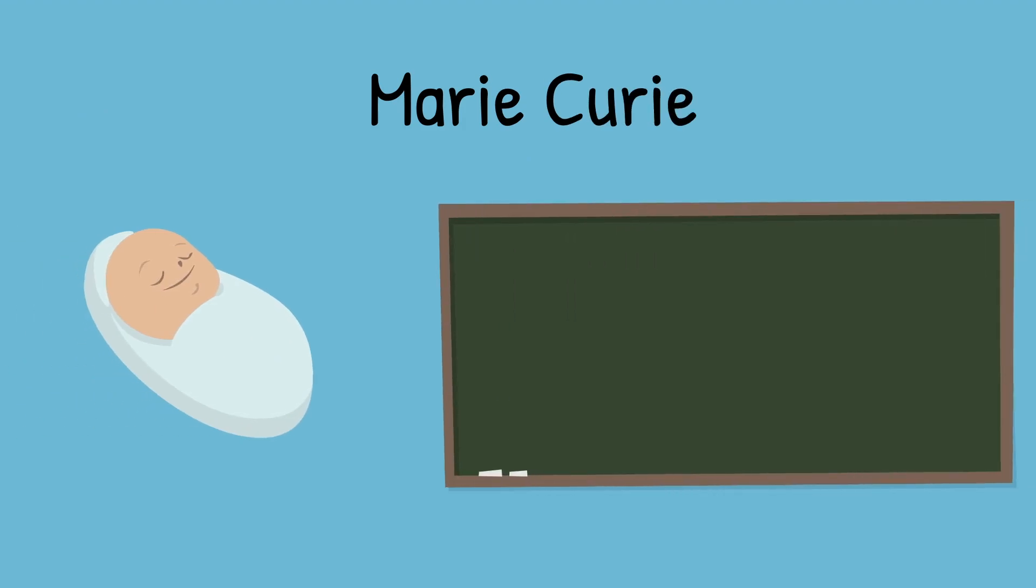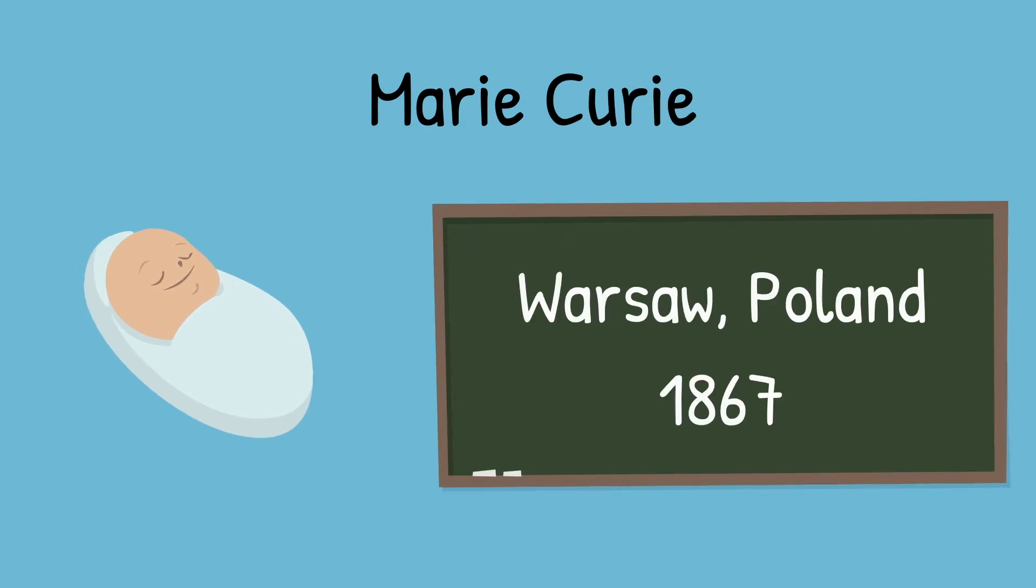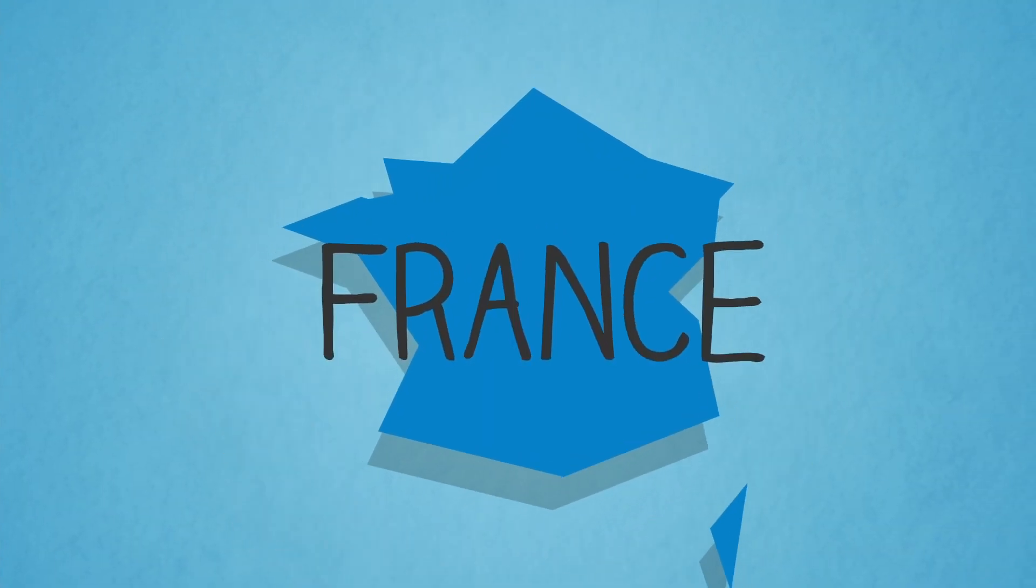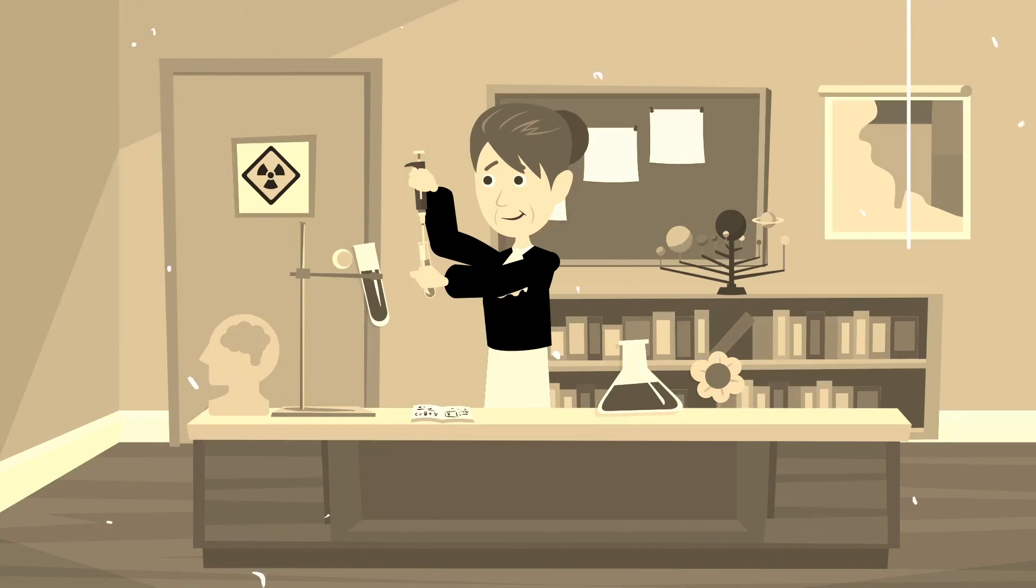Marie Curie was born in Warsaw in Poland in 1867 and is famous for a few reasons. She spent most of her life living and working in France, studying physics and chemistry.